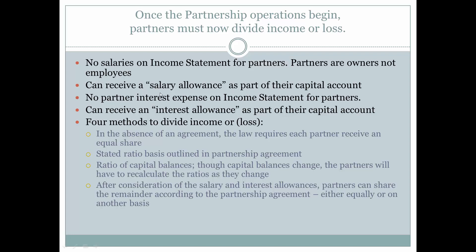Let's talk about the dynamics of a partnership before we discuss the four methods to divide income or loss. Partnerships are formed for a variety of reasons and can have different dynamics. One partner may be working more with clients than another, while another partner may have brought the clients in and is somewhat semi-retired. The working partner may be given a salary allowance to compensate him for doing more of the work associated with the clients.